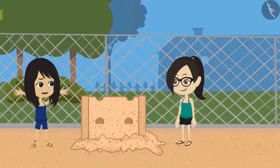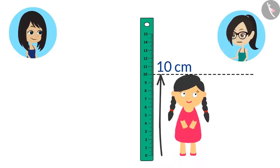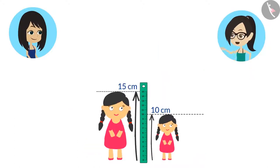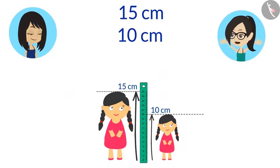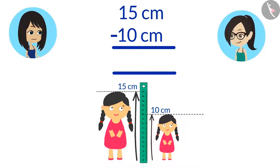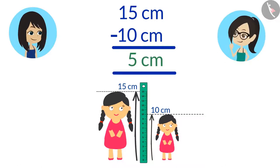But how much taller is your doll than my doll? That's easy to find. Your doll is 10 centimeters tall and my doll is 15 centimeters tall. If we subtract the height of your doll, which is 10 centimeters, from the height of my doll, which is 15 centimeters, we will know how much shorter your doll is. Subtracting 10 from 15 gives us 5. That means your doll is 5 centimeters shorter than my doll, and we can also say that my doll is 5 centimeters taller than your doll.